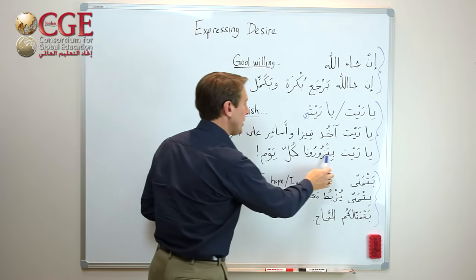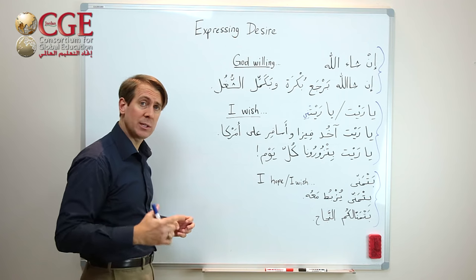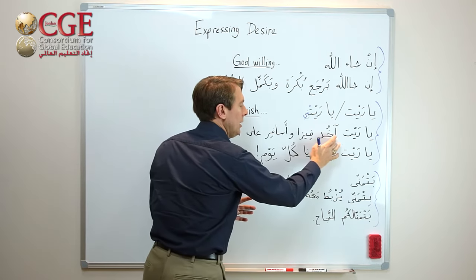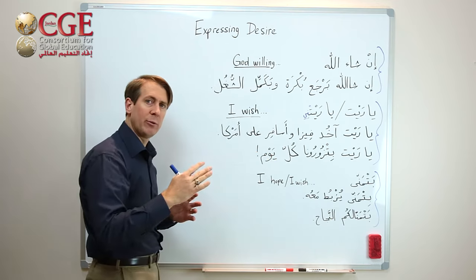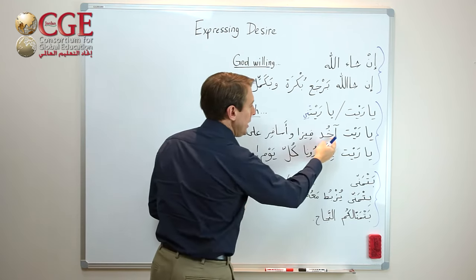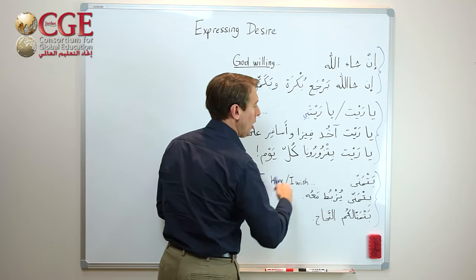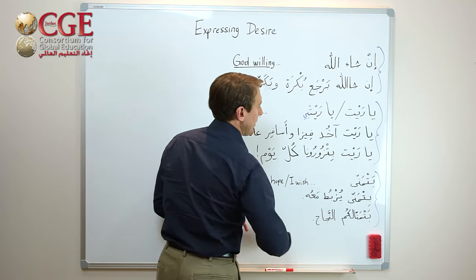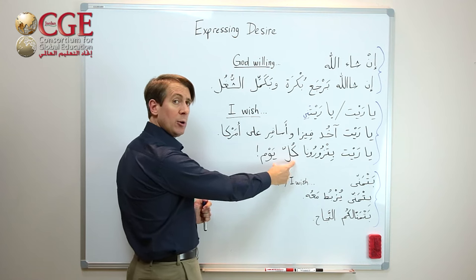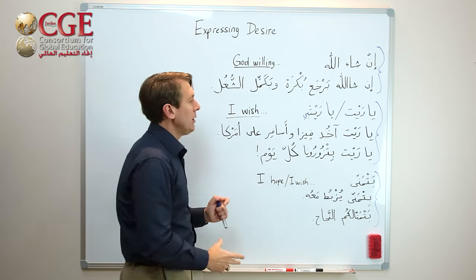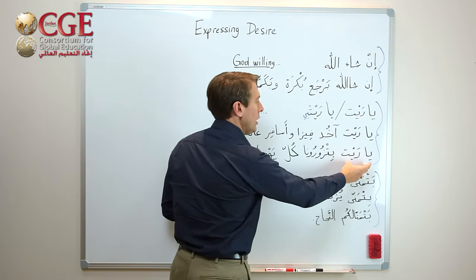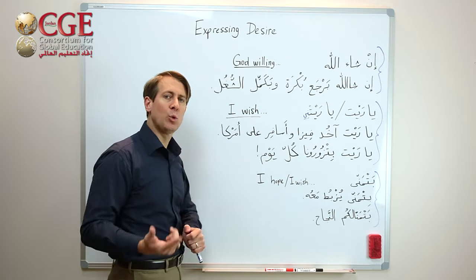There is one condition where you do put the 'ba' on the verb after 'yareet': when you are expressing frequency. If there's a frequency marker, then you would say for example 'betzool' or use 'be' in the verb. So: 'Yareet bitzuruna kul yom' — 'I wish you all would visit us every day.' The 'na' indicates 'us' as the object, and 'kul yom' means 'every day.' The 'ba' is there because of the frequency being expressed.